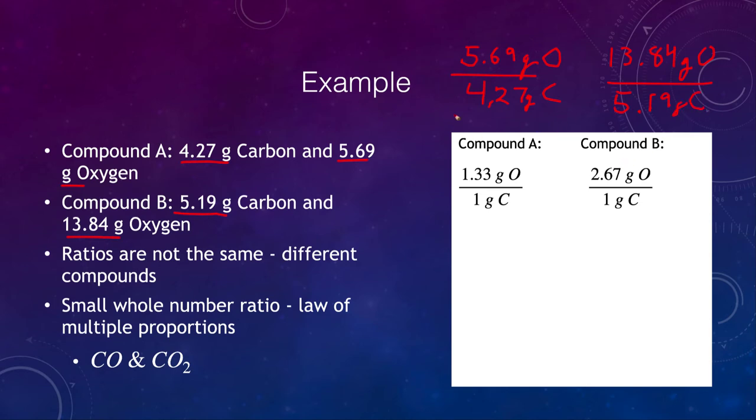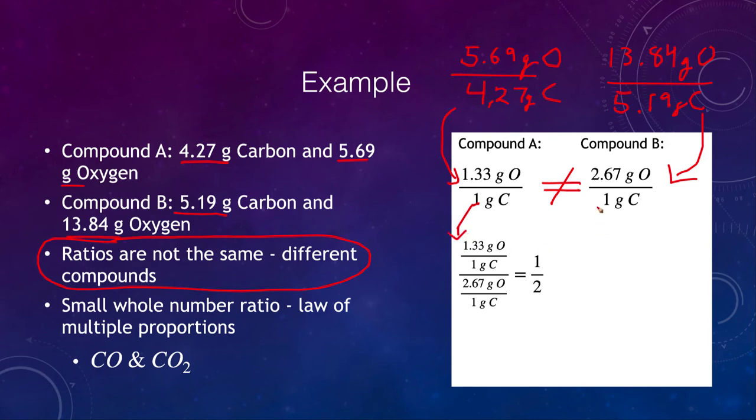So if we divide these, we find that compound A is 1.33 grams of oxygen per gram of carbon. Compound B is 2.67 grams of oxygen per gram of carbon. Now the first thing we know the ratios are not the same. So these are different compounds. These are not the same thing. So these are not equal to each other. They are different compounds. But when we divide them, when we compare those two ratios themselves and actually divide the two ratios, we can divide this ratio 1.33 by this one that's 2.67 and we get one half.